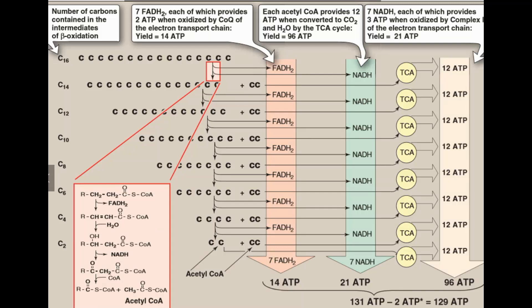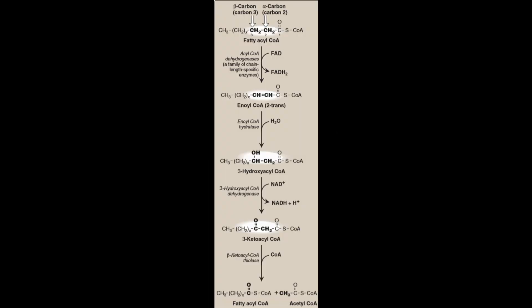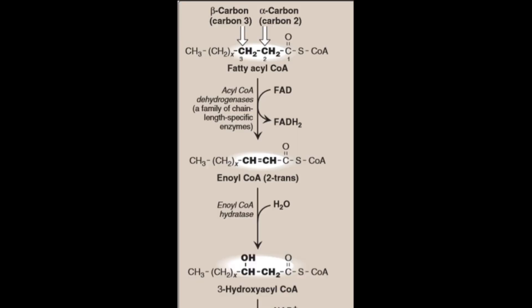Starting with even chain of fatty acids, the first cycle consists of a sequence of four reactions involving the beta carbon, which is C3, that results in shortening the fatty acid chain by two carbons. We have acyl coenzyme A dehydrogenases as the first enzymes that act on the fatty acyl coenzyme A. Then they are followed by enoyl coenzyme A hydratase, which adds a hydroxyl group, and we get 3-hydroxyacyl coenzyme A.